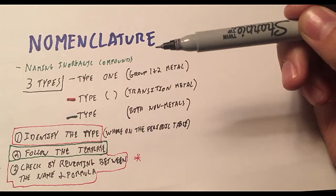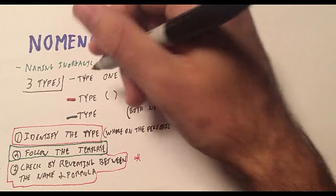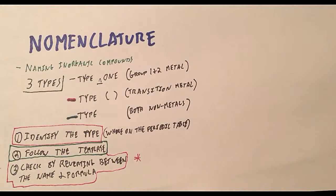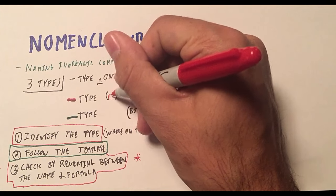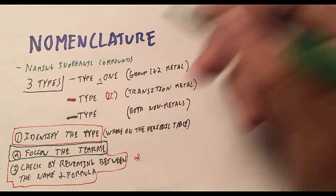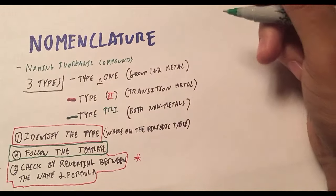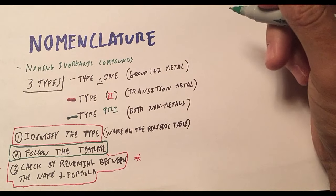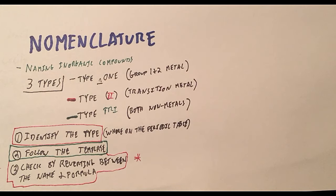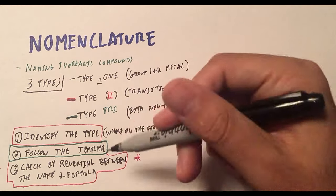We've got three different types of naming when it comes to naming inorganic compounds. You have Type 1, which I like to call Type None. You'll see why in a second. Type 2, which I put these little Roman numerals because that reminds me that I need to use those when I have Type 2. And Type 3, which I call Type Tri, because I'm going to use prefixes like di, tri, and tetra and things like that to do that naming. So I'm just going to show you the formula or the template for naming each one of these compounds.